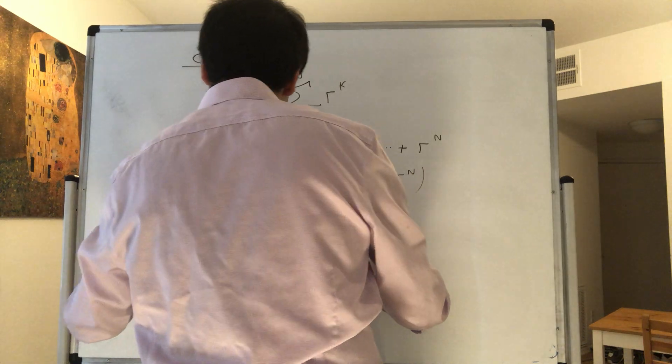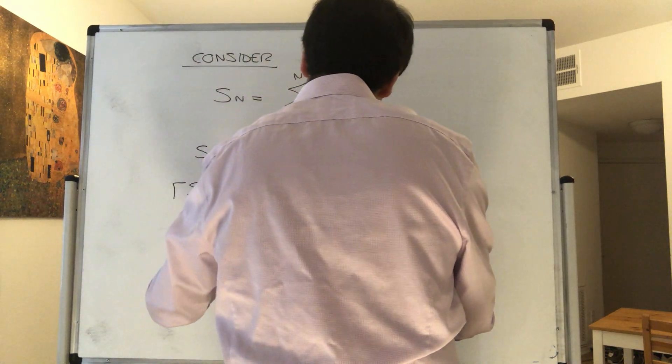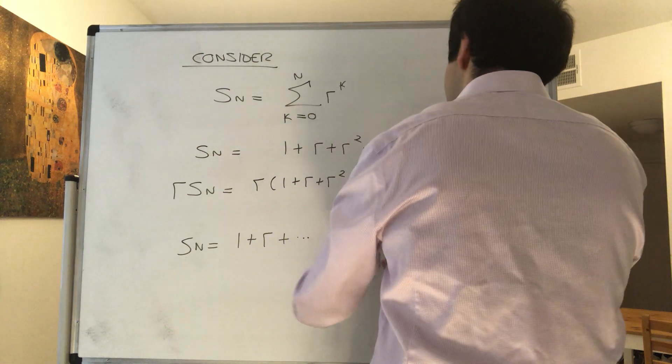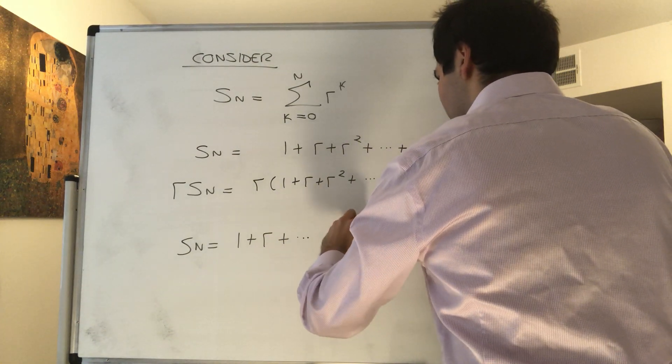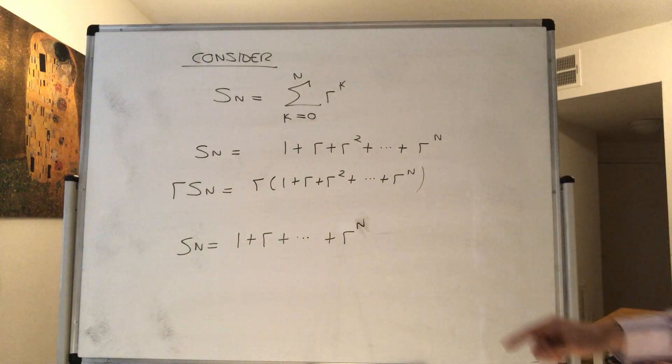Let me just rewrite S_n for reasons that will be apparent in a second. So 1 plus r dot dot dot plus r to the n. On the other hand, r*S_n.